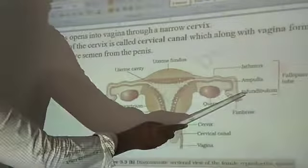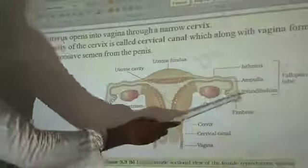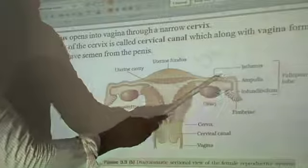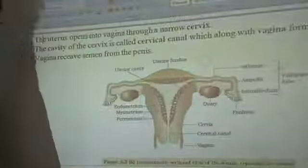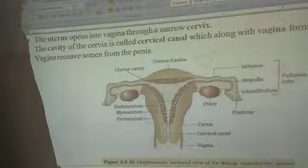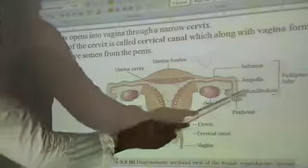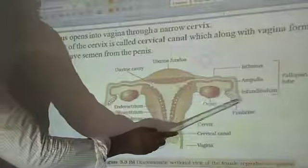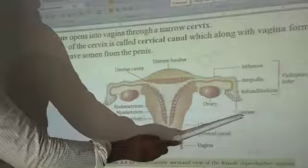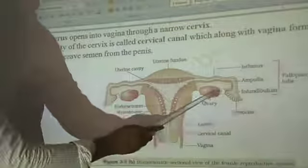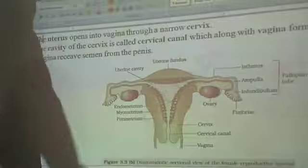The infundibulum is the first part, which is near to the ovary. The infundibulum is opened into the ampulla, and the ampulla is opened into the isthmus. These three parts are commonly called the fallopian tube, also called the oviduct. The infundibulum contains finger-like projections called fimbriae, which are used for the collection of the ovum released from the ovary.